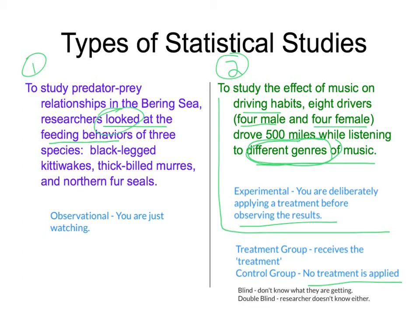To break it down further, you can have studies that are blind, meaning a participant doesn't know whether they're getting the placebo or the actual drug. A double-blind study means the researcher doesn't know either, because there could be a tendency for the researcher to say something that might sway people in the treatment or control group into thinking it's working.